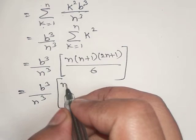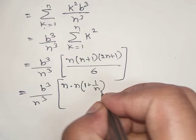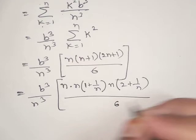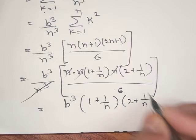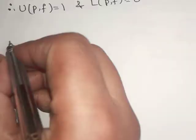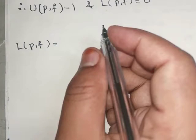Taking n common from each factor: b³/n³ · n·(1 + 1/n) · n·(2 + 1/n) / 6. The n³ from numerator and n³ from denominator cancel, giving U(P, f) = b³ · (1 + 1/n)(2 + 1/n) / 6.